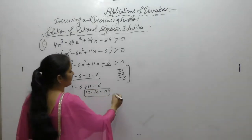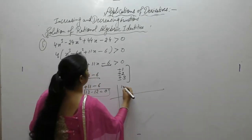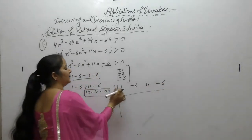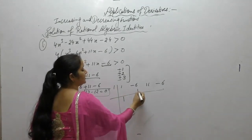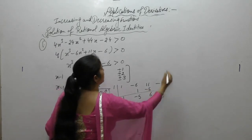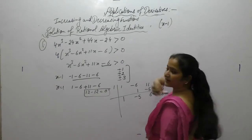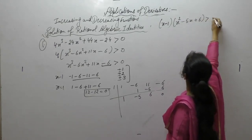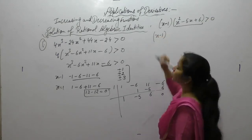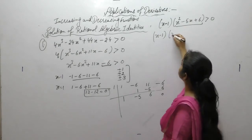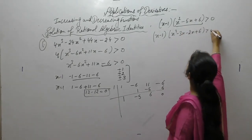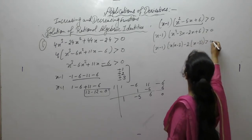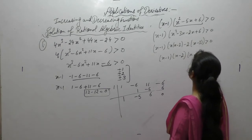So x equals 1 is one of the factors of this cubic polynomial. Using synthetic division with coefficients of x cubed, x squared, x, and the constant term, we get x squared minus 5x plus 6. Solving this quadratic: on multiplication we want 6 and on adding we want minus 5, so minus 3 and minus 2. We get factors (x minus 1)(x minus 2)(x minus 3).